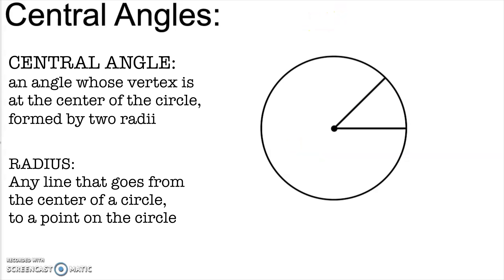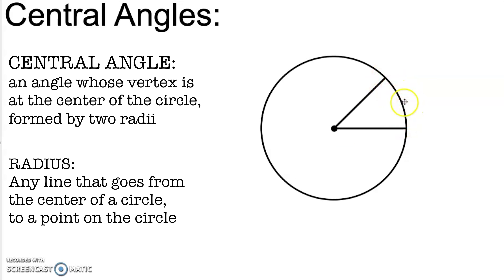A central angle is an angle whose vertex is at the center of the circle, and it is formed by two radii. Radii is the plural of radius, and a radius is any line that goes from the center of a circle to a point on the circle. So this angle here is a central angle. What makes a central angle so foundational to circles is that they have a direct relationship to what we call the intercepted arc.